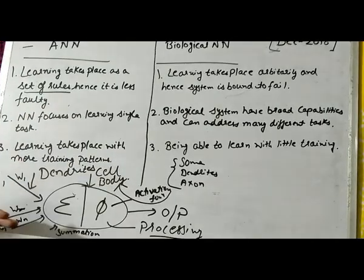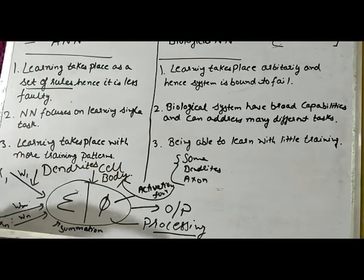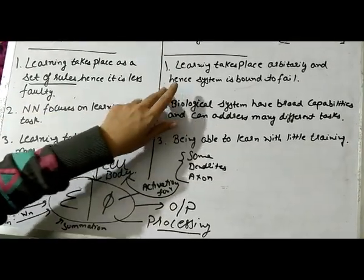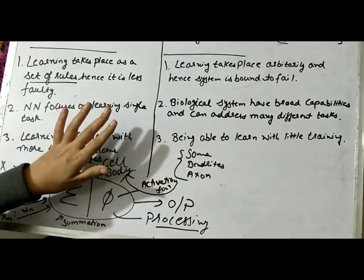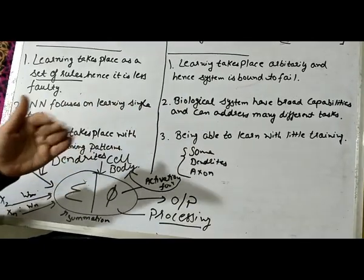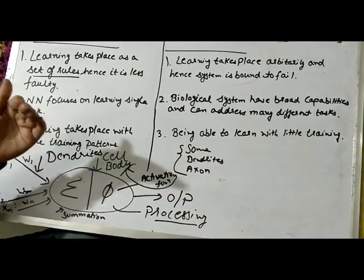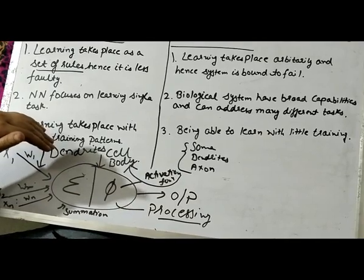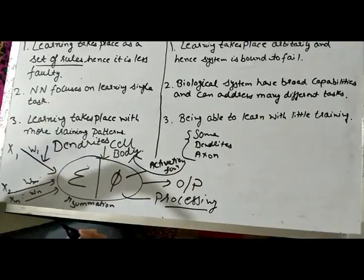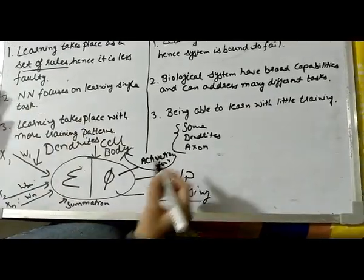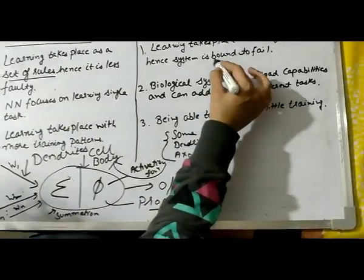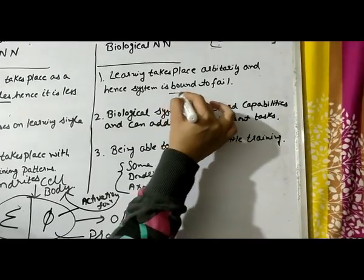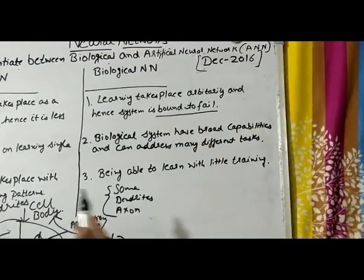In ANN, because everything follows a rule, a process, and a system, there are fewer chances of faults. But in the biological brain, there is no fixed system, which means there are maximum chances of failure in certain tasks. So when making a comparison, the ANN is less faulty due to its rule-based nature.